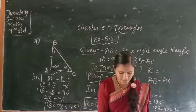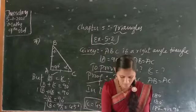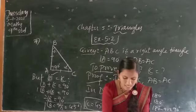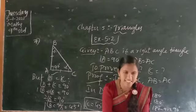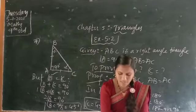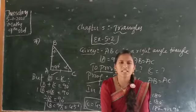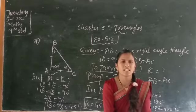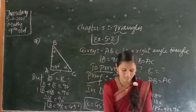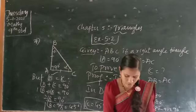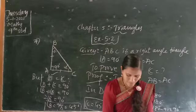Next, take the 8th question. Show that the angles of an equilateral triangle are 60 degrees each. You know already — equilateral triangle means a triangle in which all 3 sides are equal. Show that.